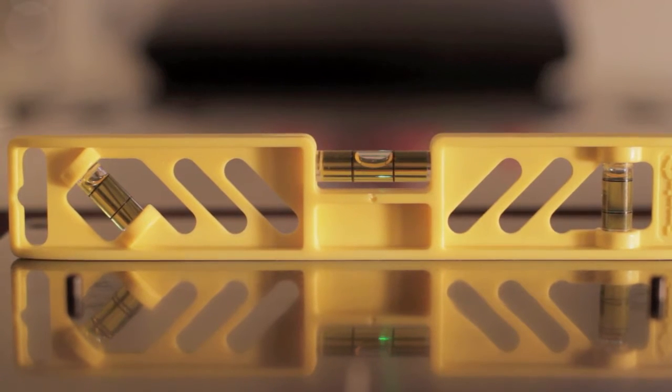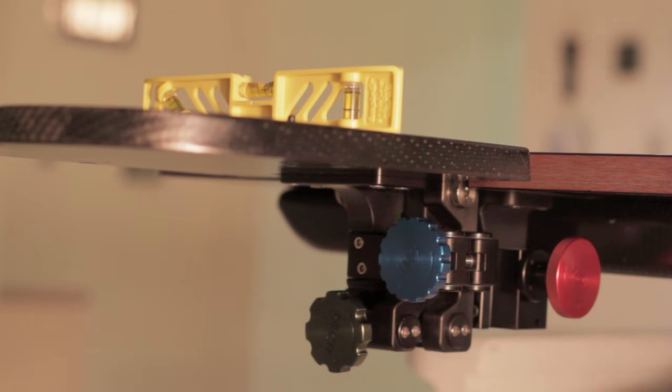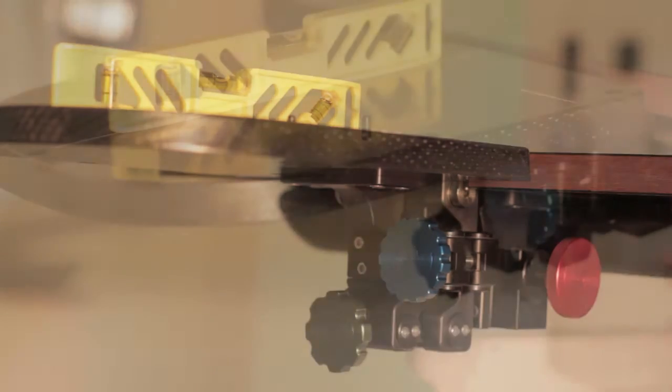First, I will use the level to correct for roll by using the knob on the underside of the head adjuster. Next, I will correct for pitch, again by using the spirit level and the knob on the underside of the head adjuster.